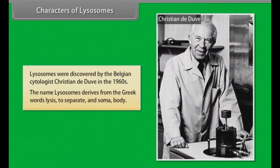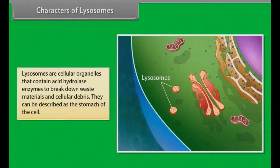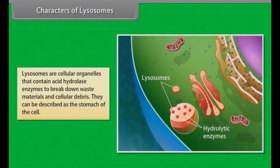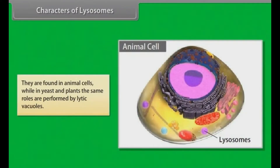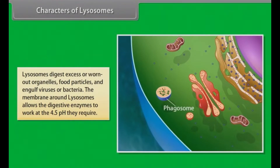Characters of lysosomes. Lysosomes were discovered by the Belgian cytologist Christian de Duve in the 1960s. The name lysosome derives from the Greek words lysis, meaning to separate, and soma, meaning body. They are frequently nicknamed suicide bags or suicide sacks by cell biologists due to their autolysis. Lysosomes are cellular organelles that contain acid hydrolase enzymes to break down waste materials and cellular debris. They can be described as the stomach of the cell. They are found in animal cells, while in yeast and plants the same roles are performed by lytic vacuoles. Lysosomes digest excess or worn-out organelles, food particles, and engulf viruses and bacteria. The membrane around lysosomes allows the digestive enzymes to work at the 4.5 pH they require.